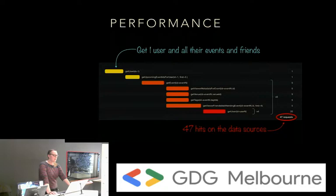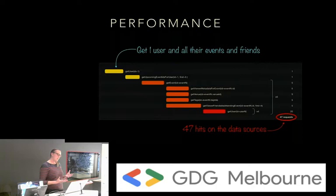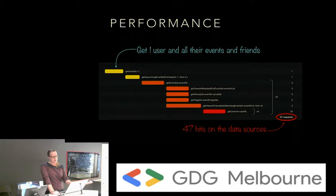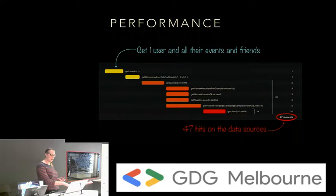Anyone who's heard of GraphQL before has probably heard of the N+1 problem. Without any optimisation, here's what you're looking at: you get a user with their ID, then get upcoming events for them — say five events. Now you fetch metadata, the venue, tags, and friends for those five events — that's five queries. Then for four friends per event, that's 20 more queries. So now we're looking at 47 queries for this one request.